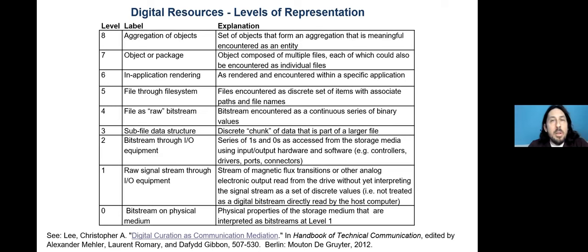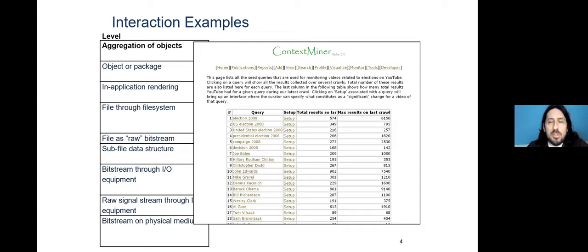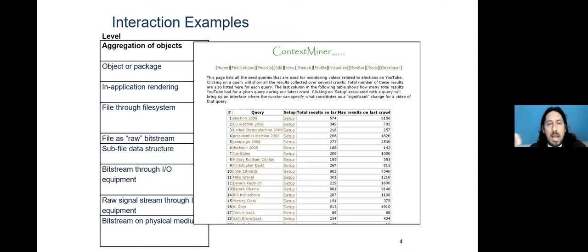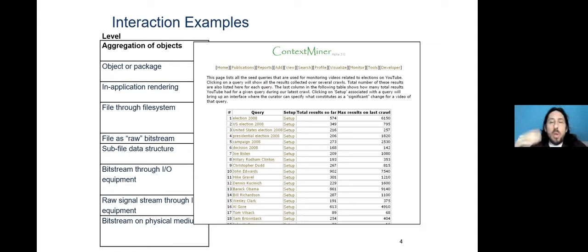To briefly run through examples: an aggregation could be output from ContextMiner, a system developed at the University of North Carolina. Looking at 'Election 2008' queries sent to YouTube, the software pulls back results from particular topics. Through this view you're not seeing individual objects or their granular metadata — you're seeing aggregate information about what was pulled down, such as how many results a query returned and how many appeared on the last crawl, navigable like an archival finding aid.